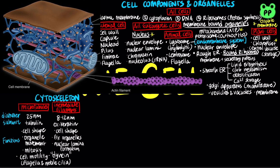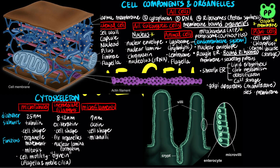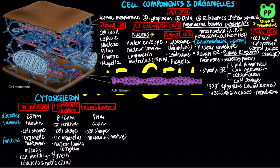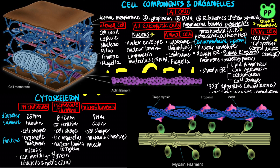Microfilaments are solid rods about 7 nm in diameter, built as a twisted double chain of actin subunits. Microfilaments function in maintaining and changing cell shape. Bundles of microfilaments also make up the core of microvilli in intestinal cells, which helps increase the surface area for nutrient absorption. Microfilaments are also part of the thin filaments during muscle contraction. Thick filaments composed of myosin pull actin filaments closer together during muscle contraction.